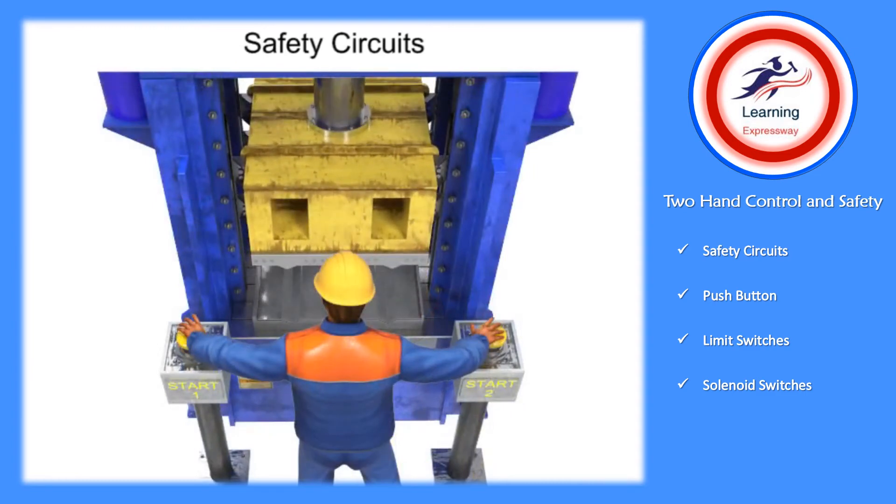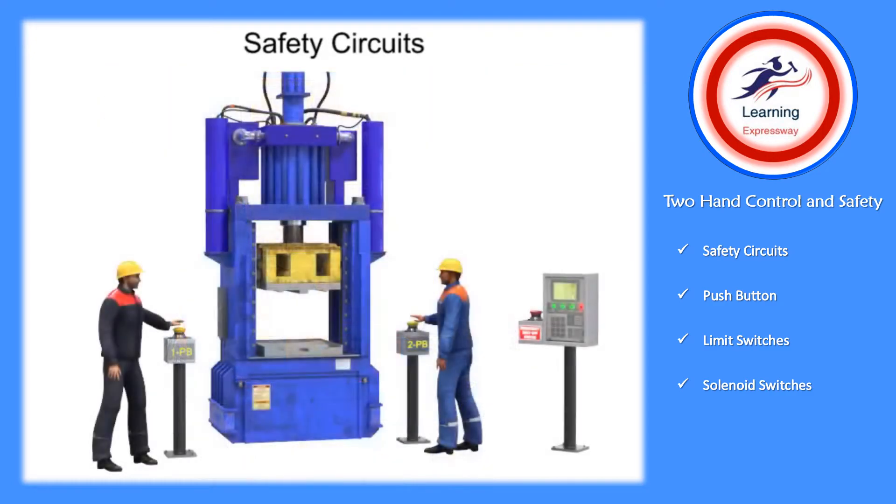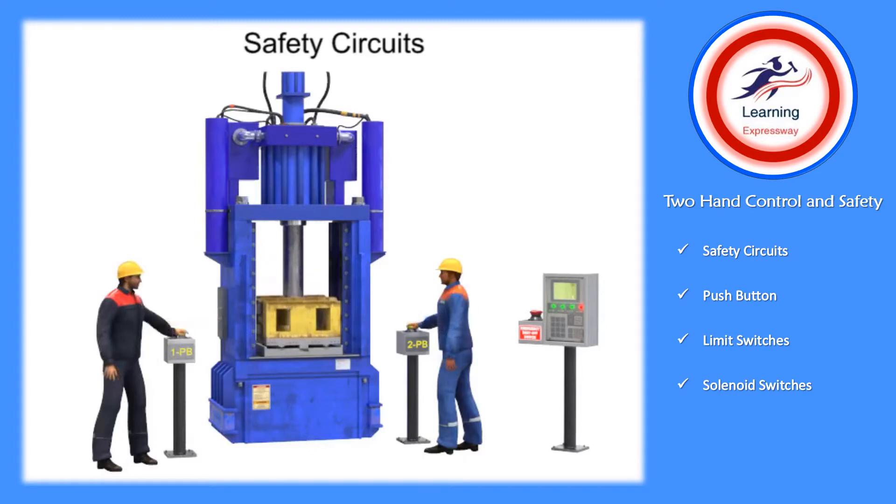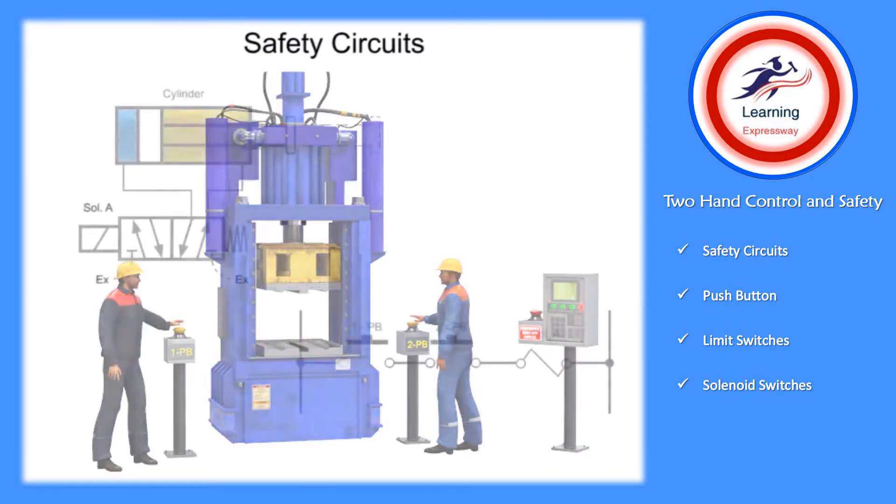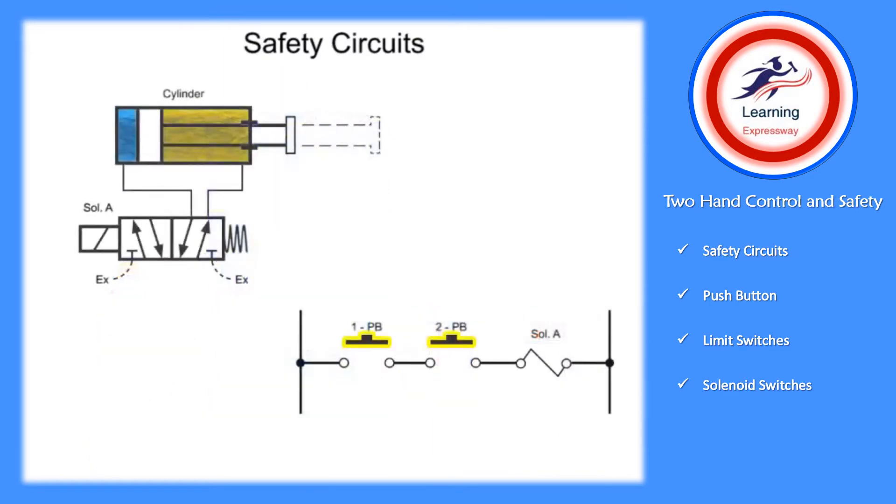Two-hand controls can also describe a machine that requires two separate operators typically located on opposite sides of the machine. Both operators must be in place to allow the machine to start its cycle. For this type of machine, two-hand operation controls typically consist of two push buttons wired in series.